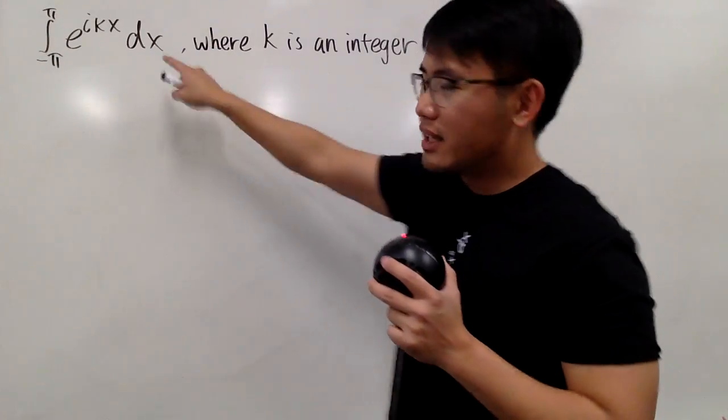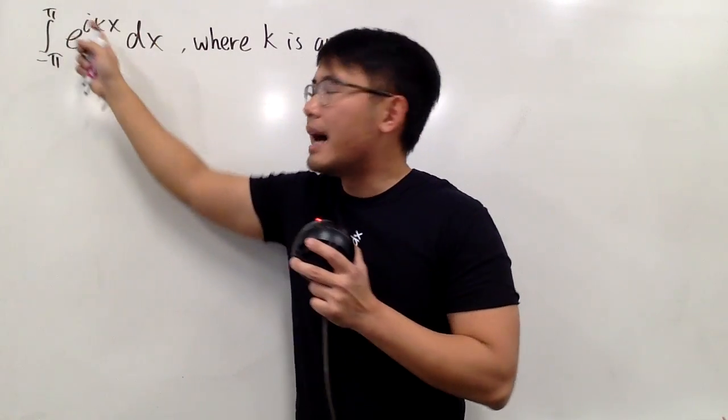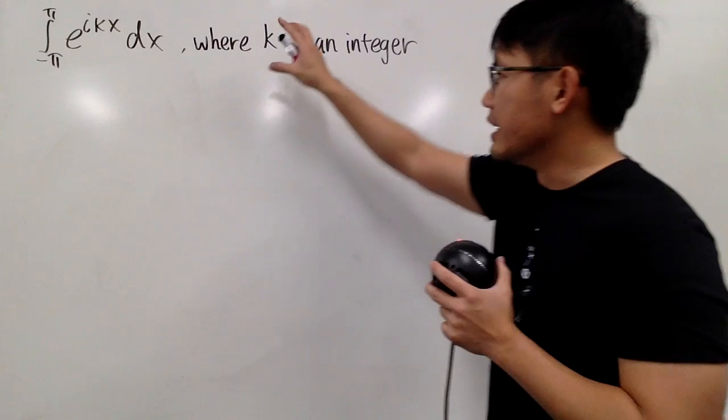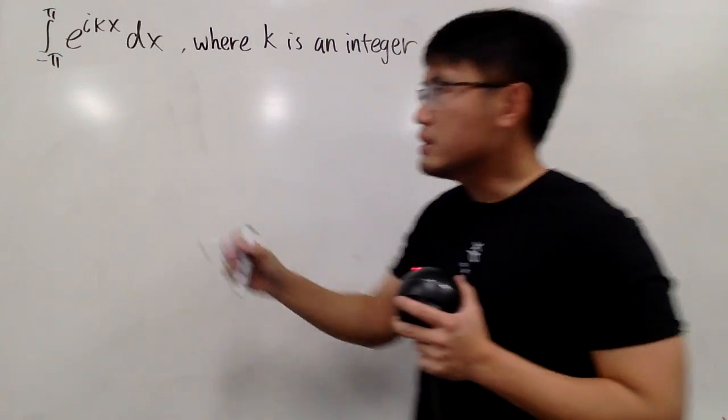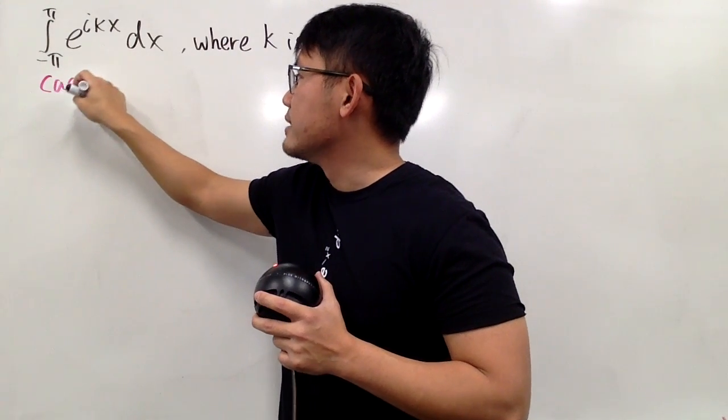Okay, in this video I'll show you guys how to take care of this integral, the integral from negative pi to pi, e to the ikx dx. And here, k is just an integer. First of all though, we actually have to consider two cases.